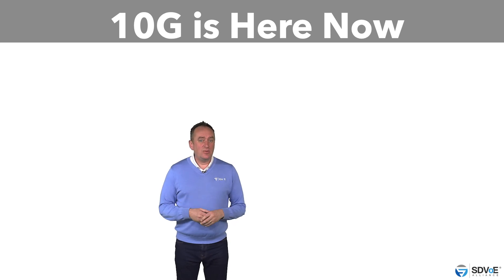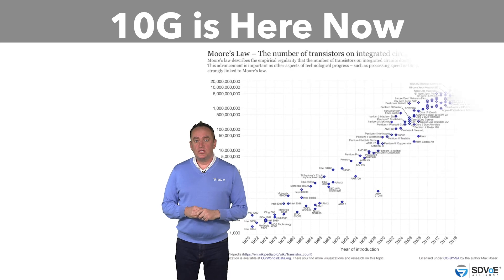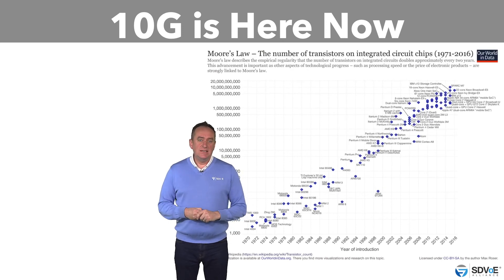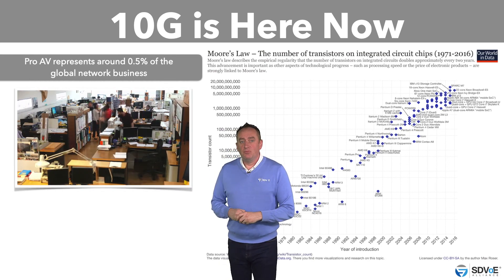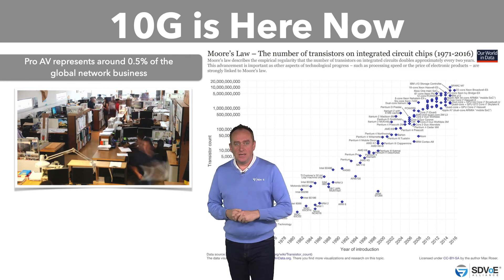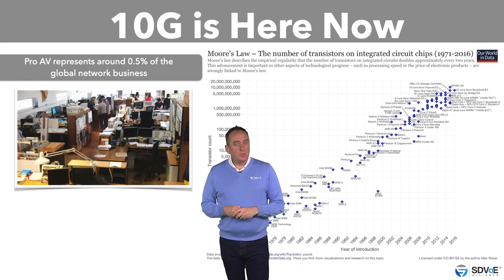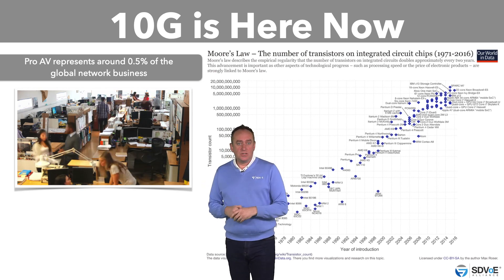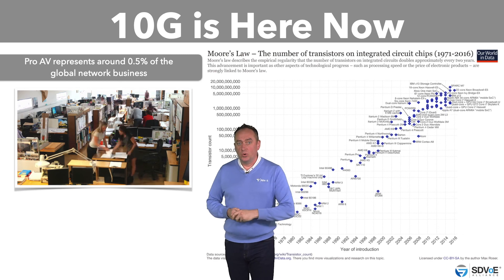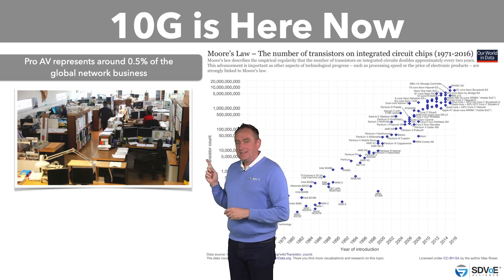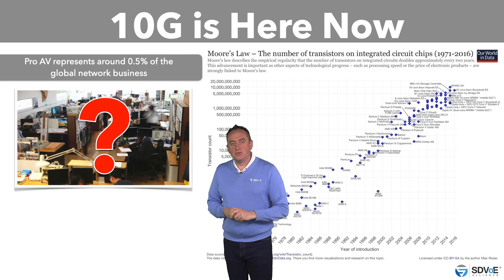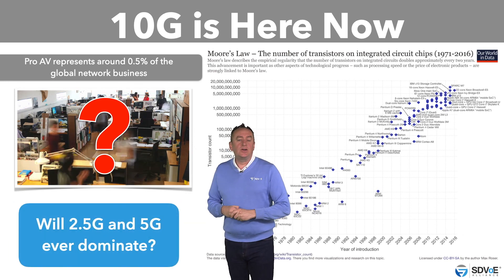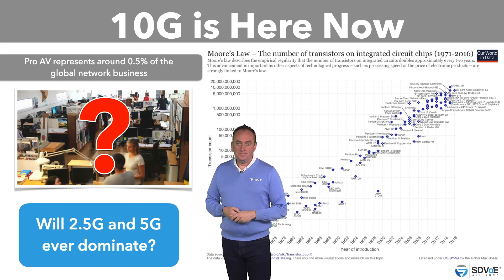10 gig is here now and it's not going away. In fact, the age-old Moore's Law, which has been pretty accurate since the 1970s, dictates that even 10 gig will be old news in the next few years. And it's also worth considering that the world of ProAV represents around 0.5% of the global networking business. So even if 2.5 gig and 5 gig took off and everyone in our industry adopted it — even the matrix switch stalwarts who haven't even adopted 1 gig yet — that other world outside of ours still needs to embrace it significantly before the network manufacturers, who we absolutely rely on, decide they're going to continue building and supporting it.